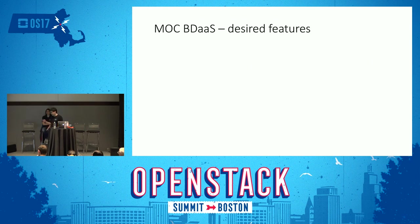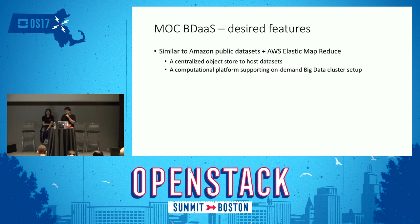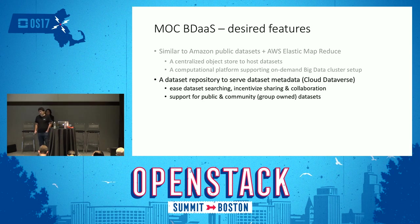When we decided to build this big data as a service solution, we started talking with our potential users, mostly coming from MOC partners in academia, industry, and government. We tried to decide on a set of features to support. Initially we started with a design similar to Amazon Public Datasets and AWS Elastic MapReduce — a centralized data repository and an on-demand big data cluster setup platform.